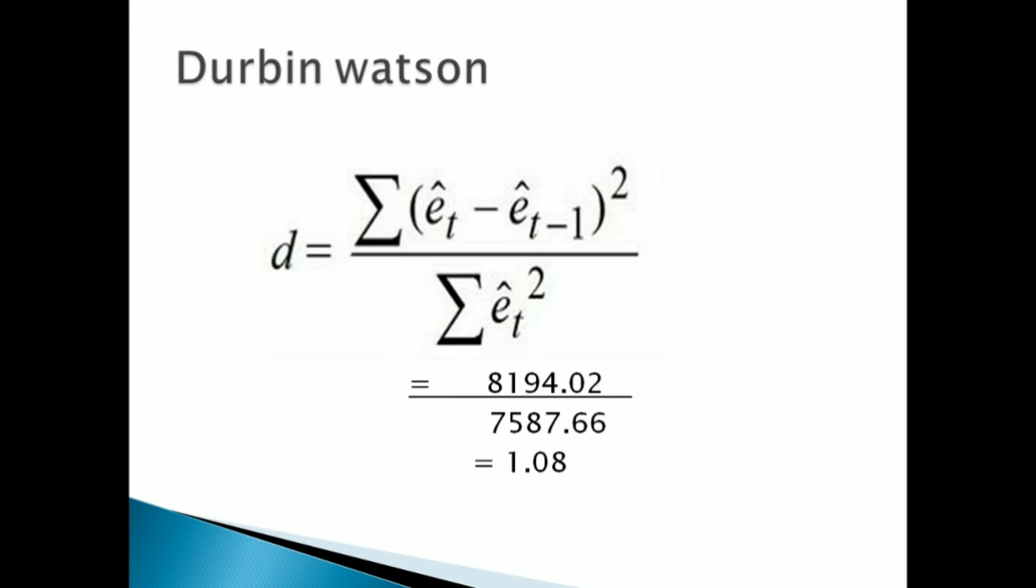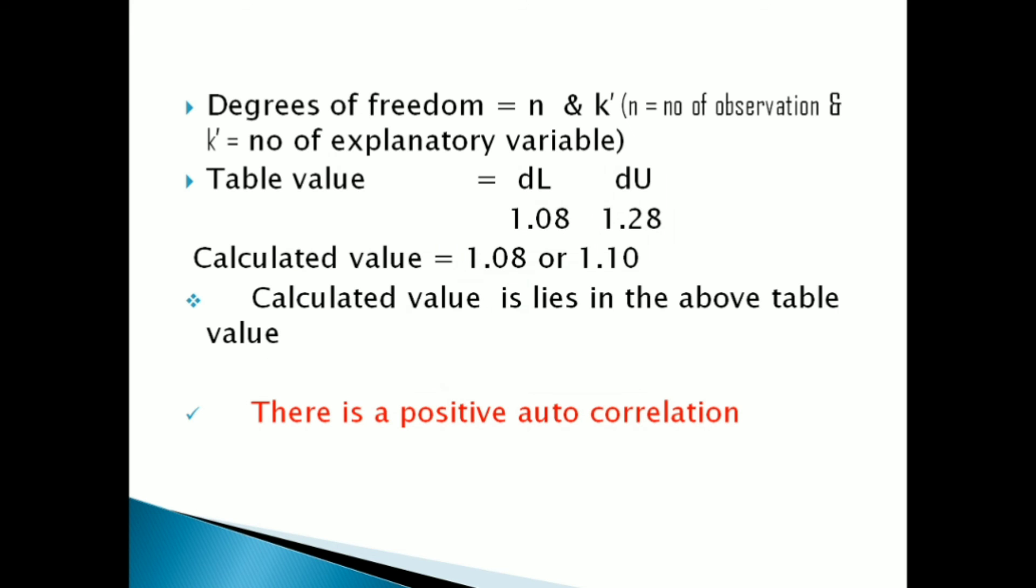You just apply these two values in your Durbin-Watson formula and you can get the answer like 1.08. When the value is 0 to 2, there is a positive autocorrelation. So in our example also, our Durbin-Watson value is 1.08.